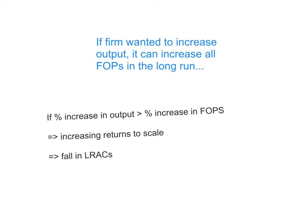All planning takes place in the long run. This is the period of time where production planning happens, because all of your factors of production can be changed — they are variable, they are not fixed. So if a firm wanted to increase output in the long run, it can increase all factors of production.